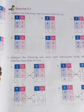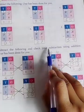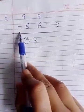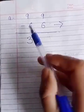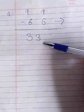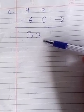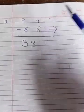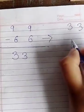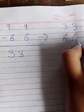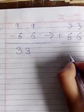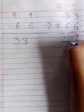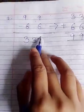Moving to Exercise 3.3, Question 2: Subtract the following and check your subtraction using addition. One has been done for you. First one is 99 minus 66. When we subtract 66 from 99, we get the answer 33. Now we have to check whether it is right or wrong, so we apply the formula: difference plus subtrahend equals minuend. Difference here is 33 and subtrahend is 66. Adding them: 3 plus 6 is 9, and 3 plus 6 is 9, so the answer is 99 — the same as the minuend. Our answer 33 is correct.